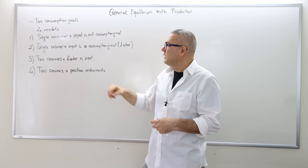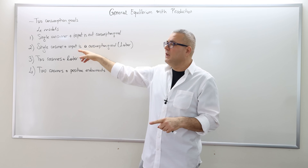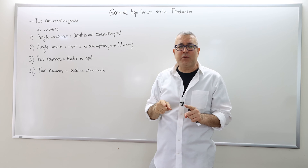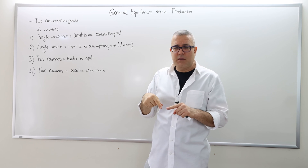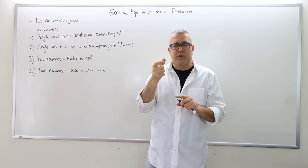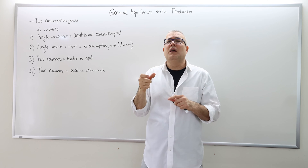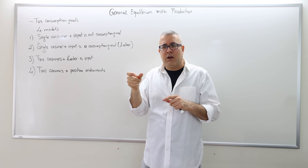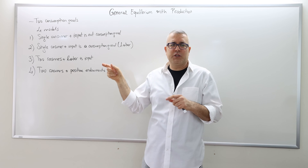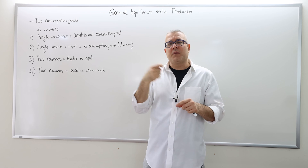In the second model, we're going to again talk about the single consumer case. This time the input will be somewhat a consumption good — in fact, the input is going to be labor. Labor itself is not going to be the consumption good, but the remaining hours will be leisure. The amount of hours you have is fixed, so the remaining hours constitute leisure, and leisure is therefore a consumption good. In that sense, the labor input is indirectly a consumption good.